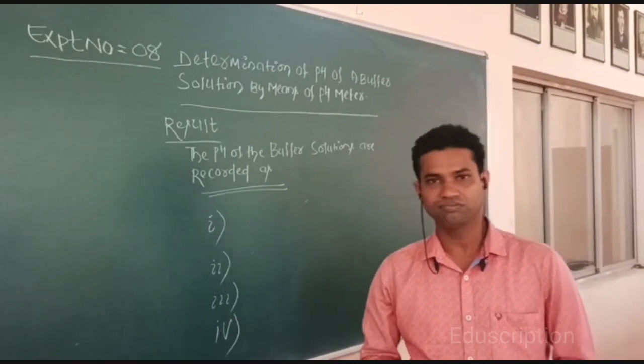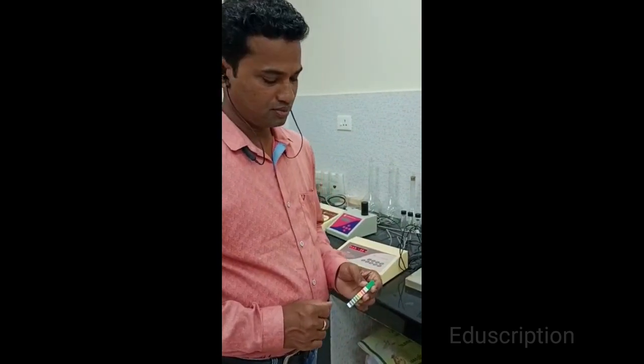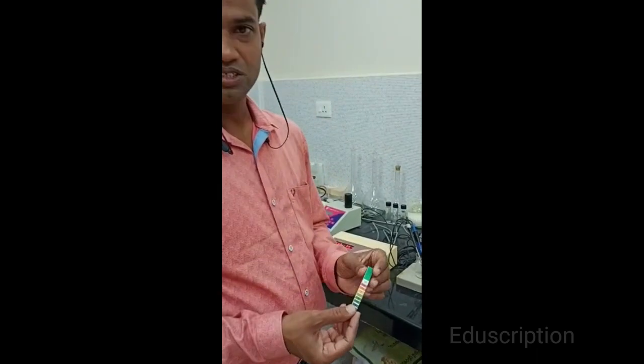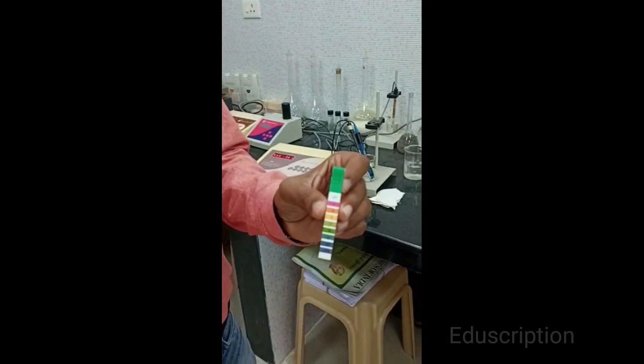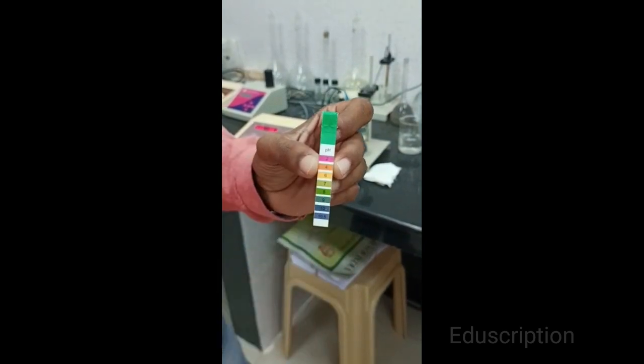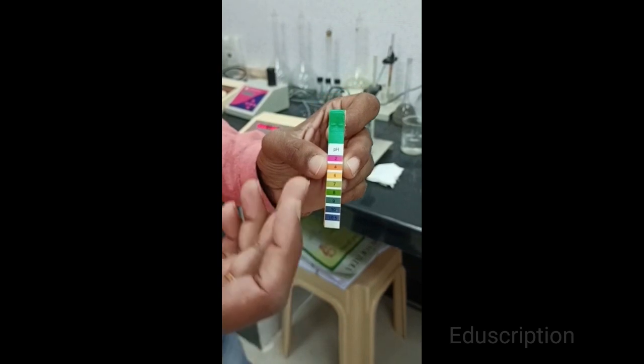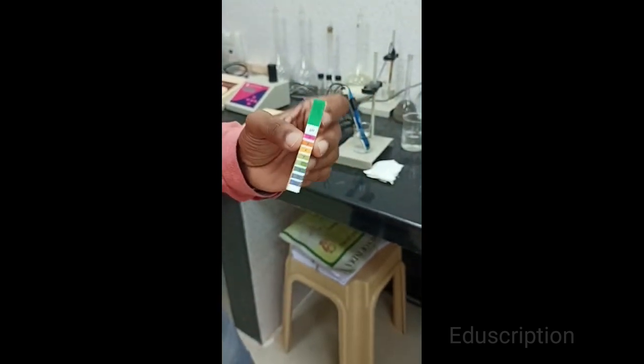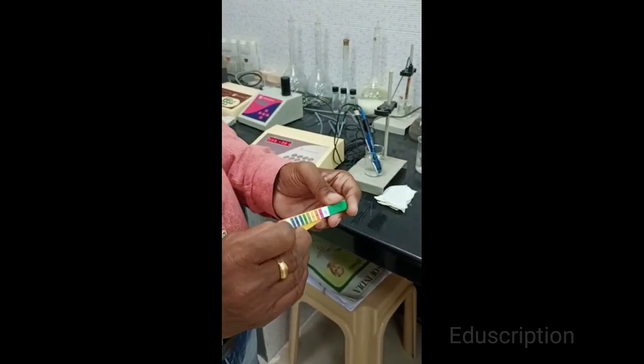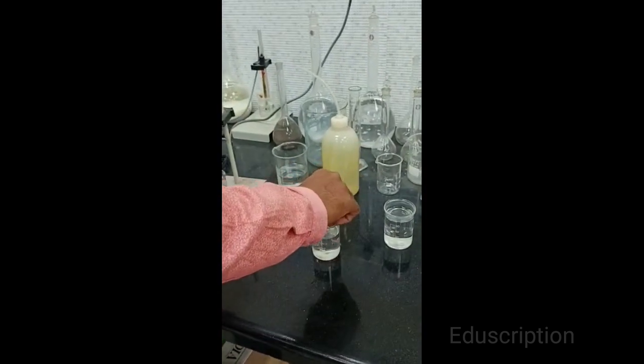Now we will go for detection of pH value. I will show you one example of colorimetric method. This is pH paper. It gives detail of color: pH 2 this color, pH 4 this color, pH 6 this color, all details are given.